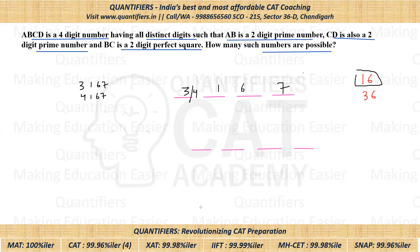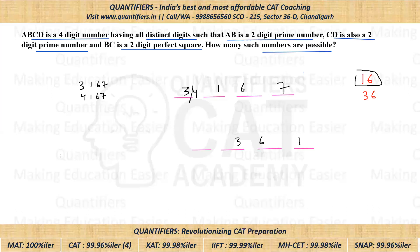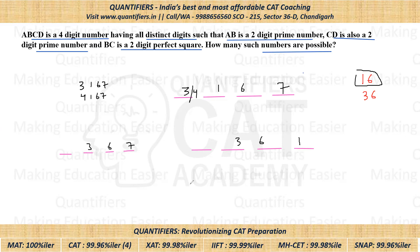Case 2: middle two digits are 3 and 6, i.e., BC = 36. Again, CD is a two-digit prime starting with 6 — either 61 or 67. So I'll build two sub-cases: one where CD = 61 and one where CD = 67.